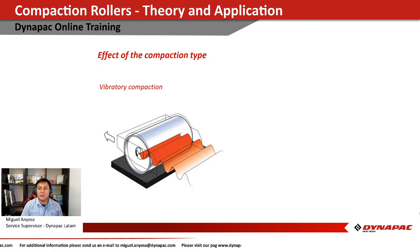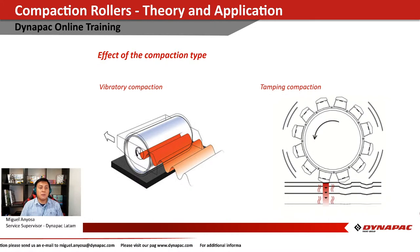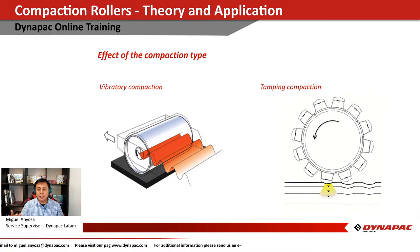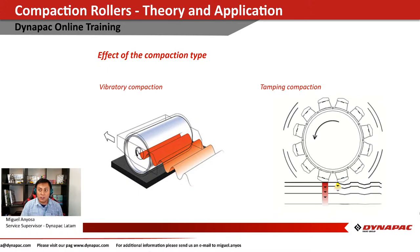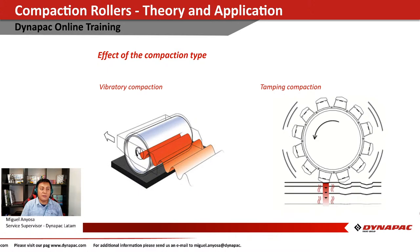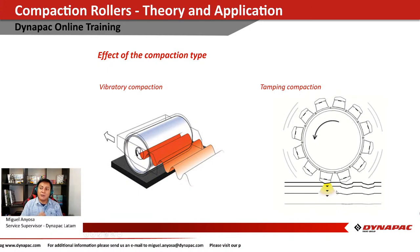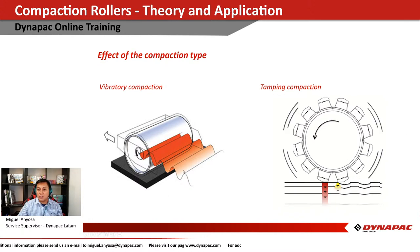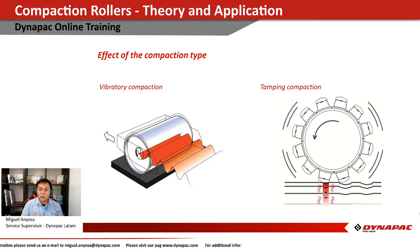Regarding the effect of compaction type: we can work with vibratory compaction or tamping compaction. For vibratory compaction we talk about frequency and amplitude. For tamping compaction we talk about the impact created every time a pad shell hits the material — here the relevant parameters are speed, weight, frequency, and amplitude.